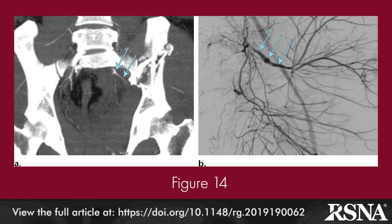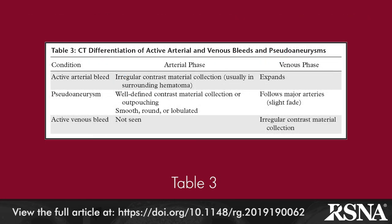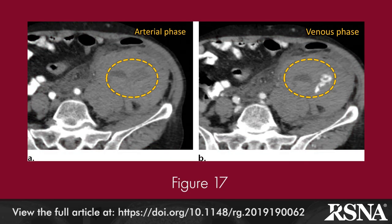Indirect or soft signs of vascular injury on CT include loss of clear perivascular fat planes, perivascular hematoma, or hematoma in the vascular territory. Figures 14 through 16 illustrate the various findings. In Figure 14, arterial wall irregularity on CT correlates with angiographic findings of arterial dissection. Table 3 provides a summary of CT differentiation of active arterial bleeding, active venous bleeding, and pseudoaneurysm formation. An active venous bleed is characterized by extravasation of contrast on venous phase imaging, which is not present on arterial phase scans, as shown in Figure 17.